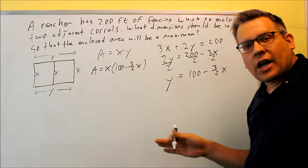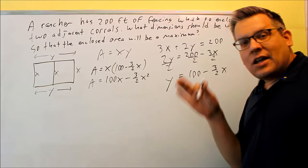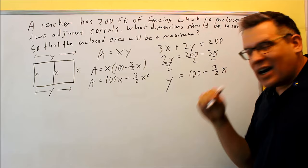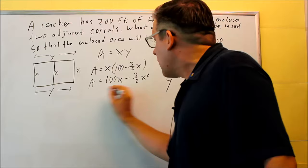Now, if this was a precalculus class, I would multiply this out, which I'm still going to do anyway here, 100x minus three halves x squared. And I would apply negative b over 2a to find the vertex. And the vertex corresponds to the highest or lowest because we have a quadratic here. However, because this is calculus, instead, I'm going to take the derivative and set it equal to zero.